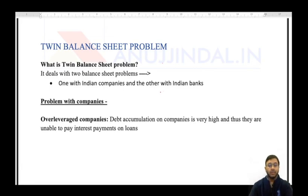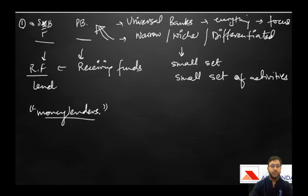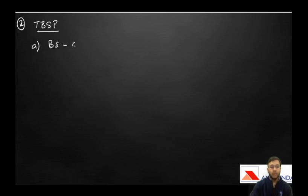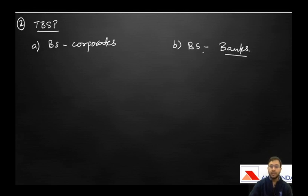The next term is twin balance sheet problem. Twin means two balance sheets are involved. The first is the balance sheet of corporates or companies, and the second is the balance sheet of banks. The cycle starts from banks lending money to these corporate houses.